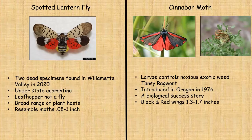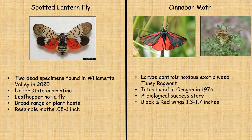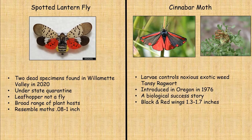Because of its red color, some people may see a cinnabar moth and think it is a spotted lanternfly. But the larvae of the cinnabar moth actually control the noxious weed tansy ragwort. These cinnabar moths were introduced in Oregon in 1976 and are a biological success story — the predator has worked very well without attacking our beneficial insects. It has black and red wings and is about 1.3 to 1.7 inches.